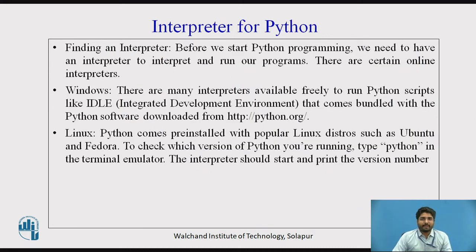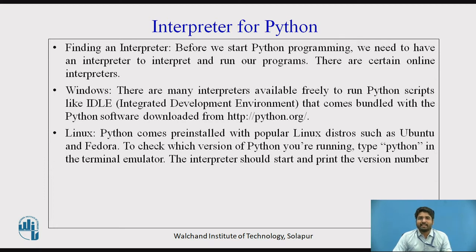We will see what is an interpreter for Python. Before we start Python programming, we need to have an interpreter to interpret and run our programs. There are certain online interpreters available. In Windows, there are many interpreters available freely to run Python scripts, like IDLE — Integrated Development Environment — that comes bundled with the Python software downloaded from Python.org. So once you download Python.org, you get a free interpreter called IDLE, and you can write and run a program on it. For Linux, Python comes pre-installed with popular distributions such as Ubuntu and Fedora. To check which version of Python you are running, type Python in the terminal and you will get the latest version.